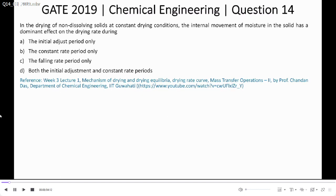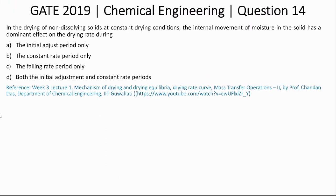Now a 2019 GATE multiple choice theory question: In the drying of non-dissolving solids at constant drying conditions, the internal movement of moisture in the solid has a dominant effect on the drying rate during — with options: (A) the initial adjustment period only, (B) the constant rate period only, (C) the falling rate period only, or (D) both the initial and constant rate periods.